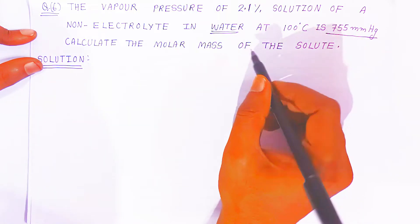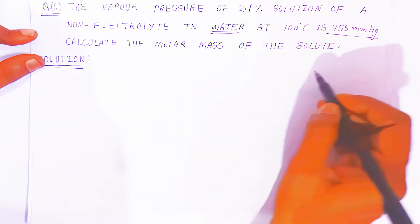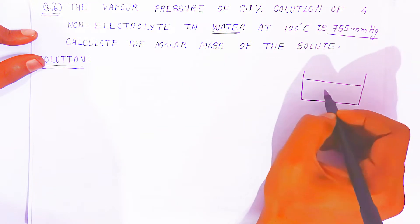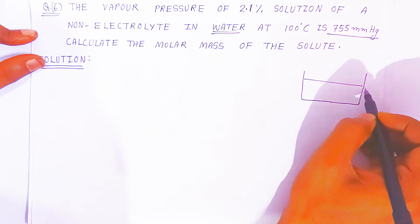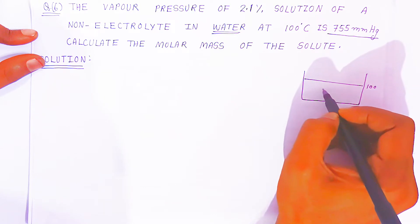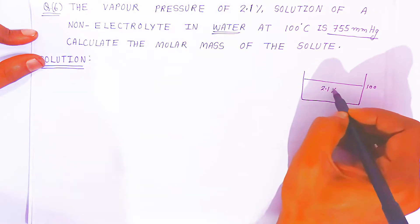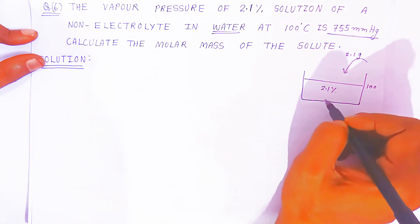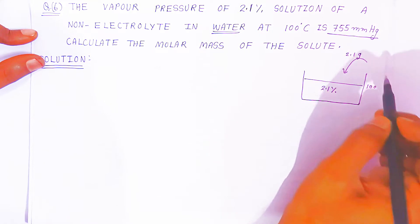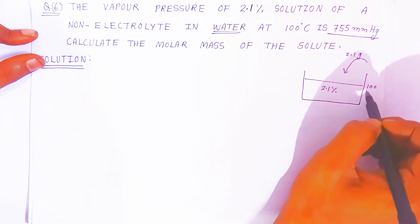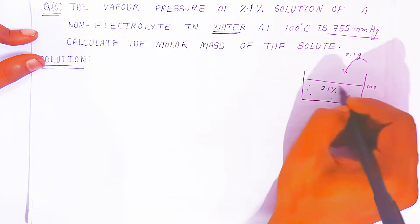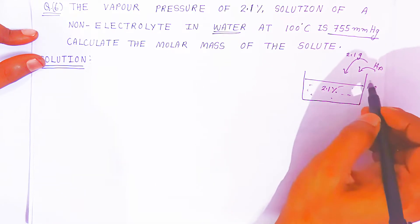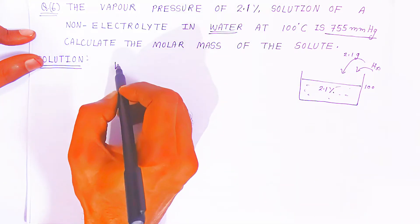We have to calculate M2. For the sake of your understanding I am drawing a diagram. You don't need to draw this in the examination. Suppose you have 100 ml of solution. In this 2.1 percent solution, if you add 2.1 grams of solute, it is called a 2.1 percent solution. You dilute it with water up to 100 ml.